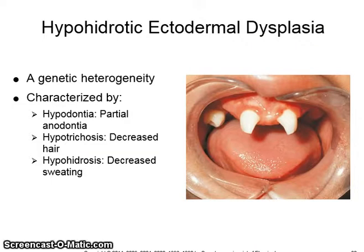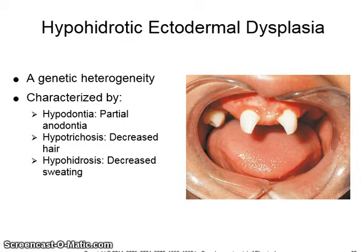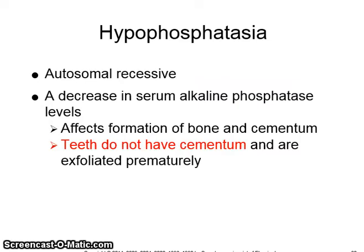Hypohidrotic ectodermal dysplasia is a genetic heterogeneity characterized by hypodontia, partial anodontia, hypotrichosis — which is decreased hair — and hypohidrosis with decreased sweating. Hypophosphatasia is autosomal recessive and shows a decrease in serum alkaline phosphatase levels. It affects the formation of bone and cementum; the teeth do not have cementum and exfoliate prematurely.